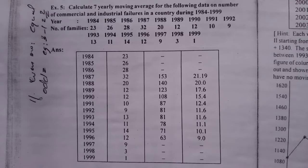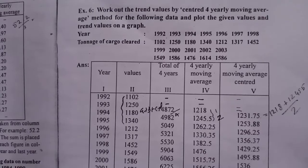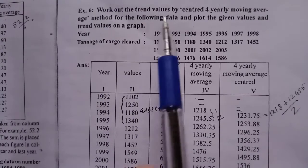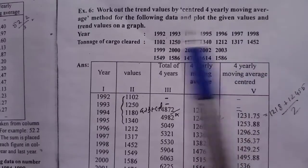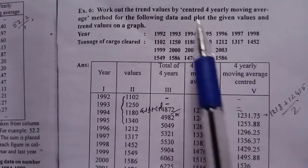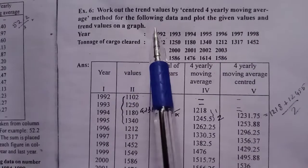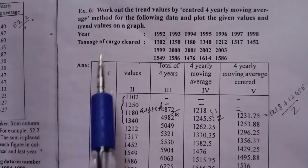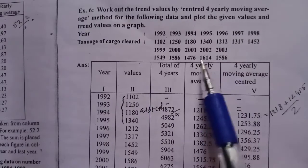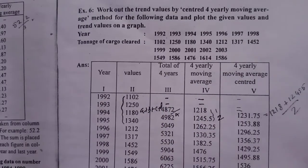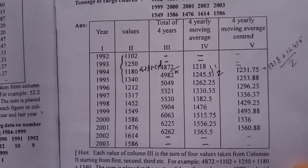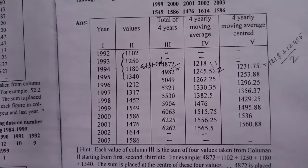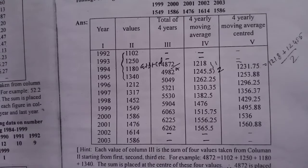For the following data, plot the given values and trend values on a graph. Here we have to take care of cargo cleared. We need to find the 4-yearly moving average. The 4-yearly moving average centered is the trend. First we take the total of 4 years, then the 4-yearly moving average centered.